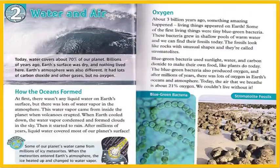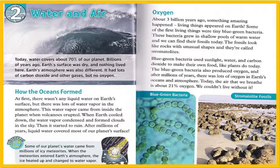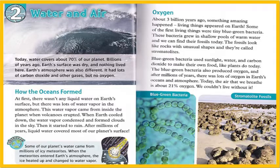Chapter 2: Water and Air. Today, water covers about 70% of our planet. Billions of years ago, Earth's surface was dry, and nothing lived here. Earth's atmosphere was also different — it had lots of carbon dioxide and other gases, but no oxygen.